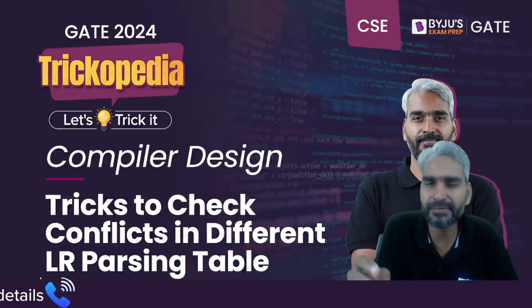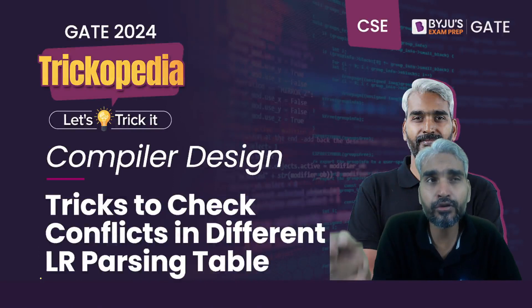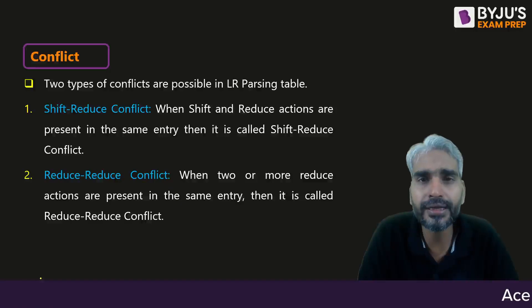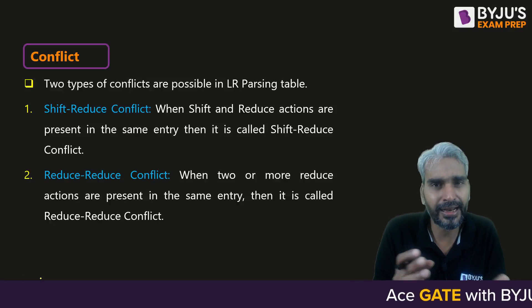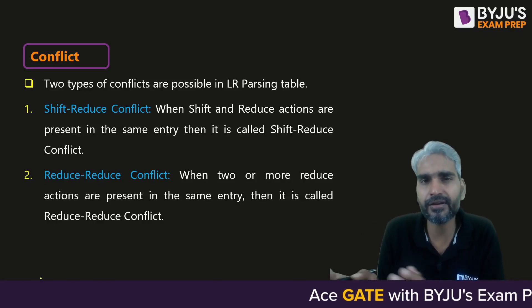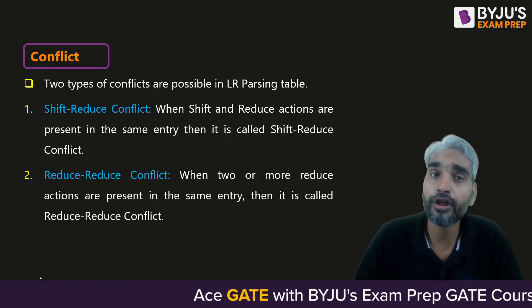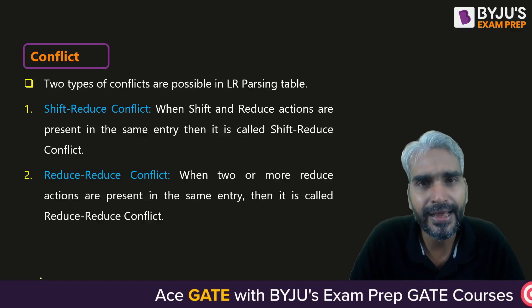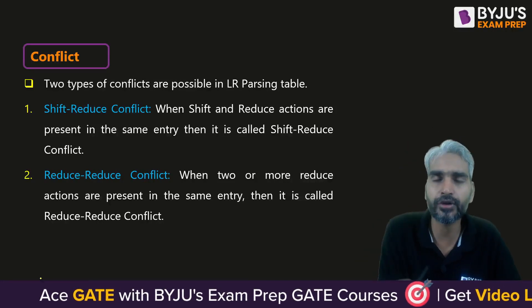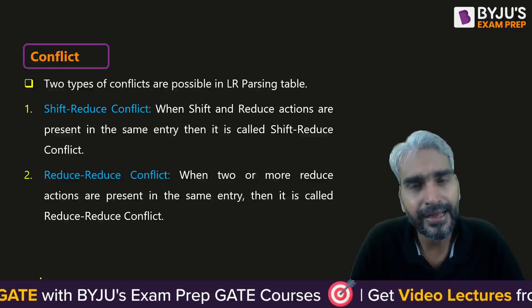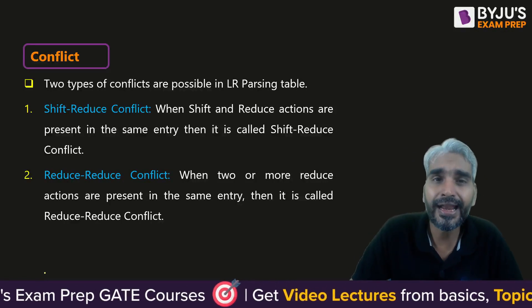You all know that while constructing the LR parsing table — whether LR0, SLR1, CLR1, or LALR1 — first we need to construct the DFA. For LR0 and SLR1 we construct the DFA of LR0 items, and for CLR1 and LALR1 we construct the DFA of LR1 items.